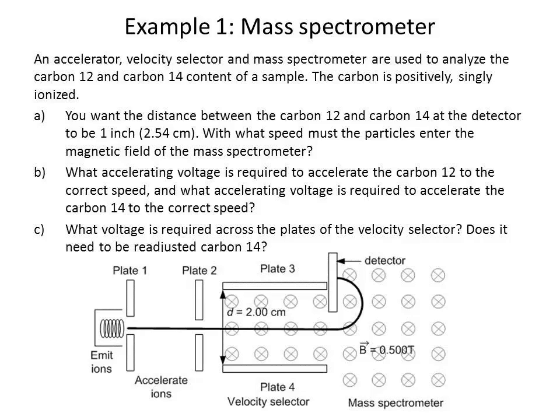Now let's do an example involving a mass spectrometer. An accelerator, velocity selector, and mass spectrometer are used to analyze the carbon-12 and carbon-14 content of a sample. The carbon is positively singly ionized. We want the distance between the carbon-12 and the carbon-14 at the detector to be 1 inch. With what speed must the particles enter the magnetic field of the mass spectrometer? What accelerating voltage is required to accelerate the carbon-12 to the correct speed, and what accelerating voltage is required to accelerate the carbon-14? What voltage is required across the plates of the velocity selector, and does it need to be readjusted for carbon-14?